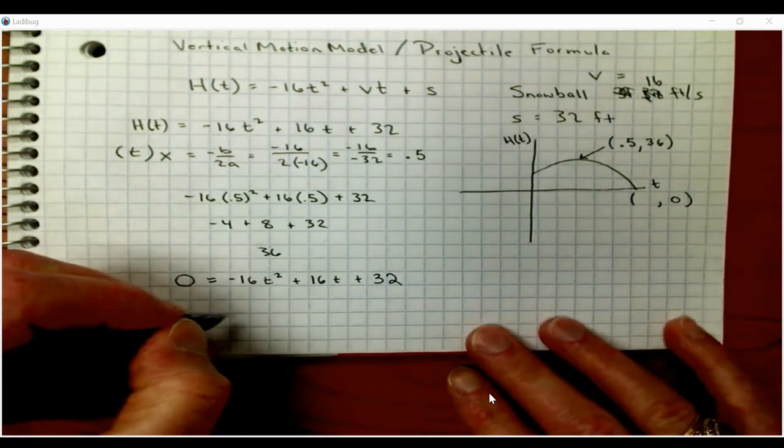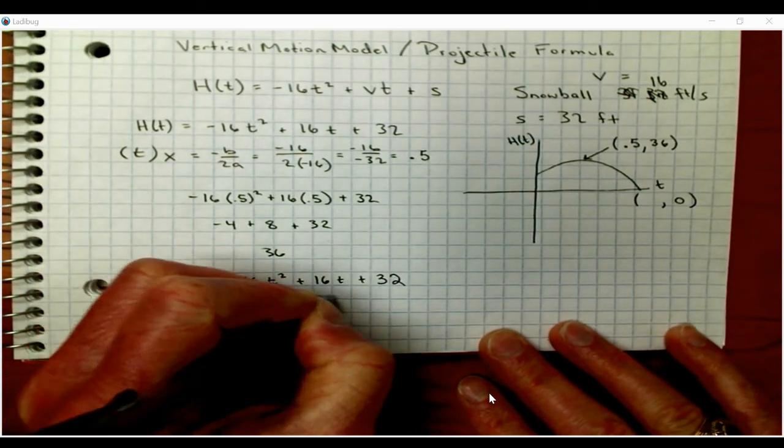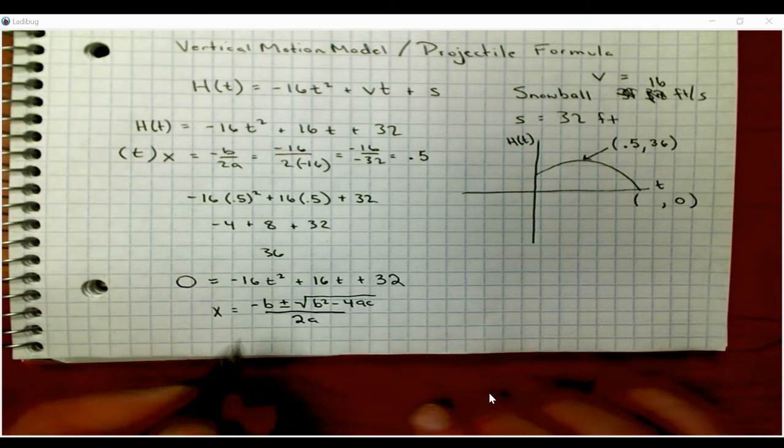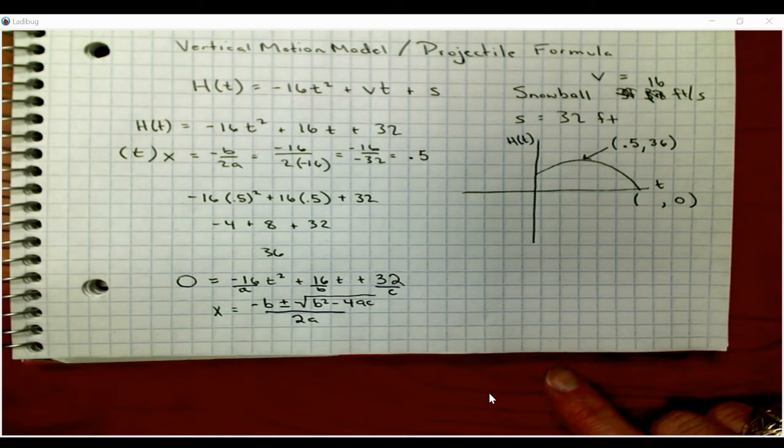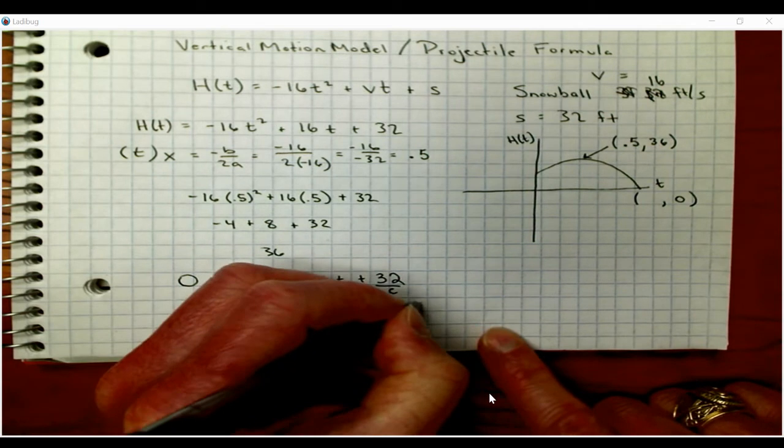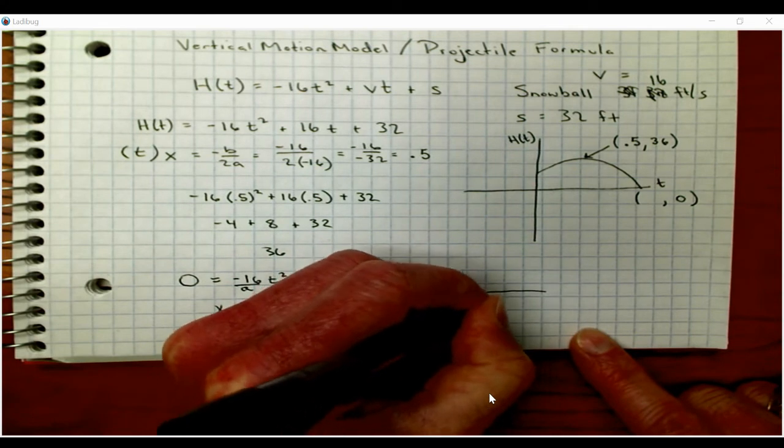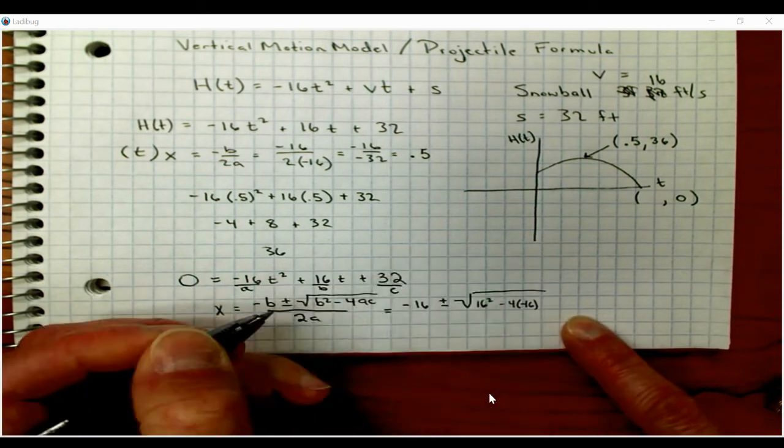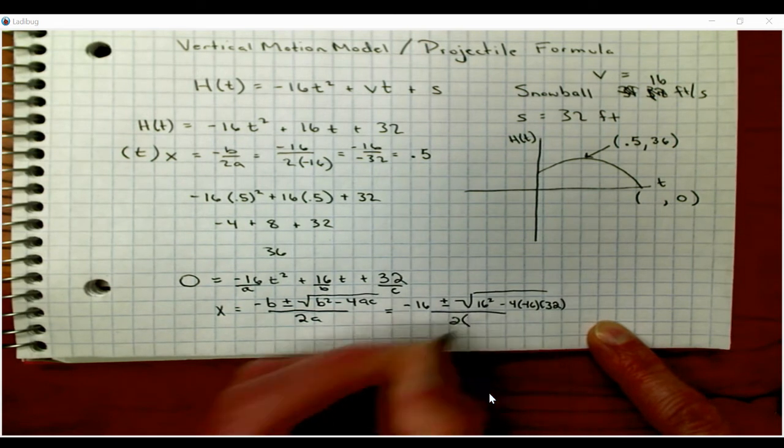So our quadratic formula is x equals negative b plus or minus the square root of b² - 4ac all divided by 2a. So remember, we've got our a value, we've got our b value, and we've got our c value. So we're going to plug those directly in. So negative, and b is 16, plus or minus the square root of 16² - 4 times a, which is -16, and c, which is 32, all divided by 2 times a, which is -16.